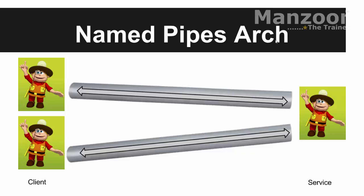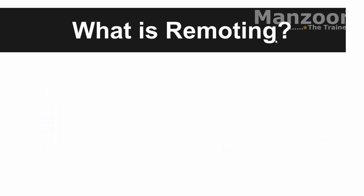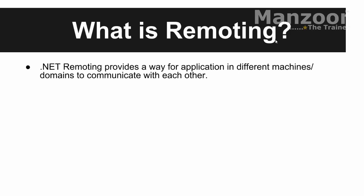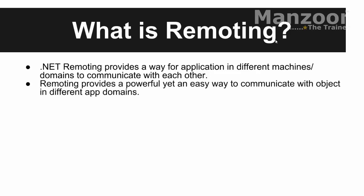Later on, we saw a need for exchanging objects and classes — I want to pass objects, not just text messages. So we started working with remoting. Remoting provides a way for applications in different machines or domains to communicate with each other. It provides a powerful yet easy way to communicate with objects in different app domains — two different applications with two different objects, or one application can create an object of another application's class.